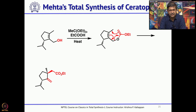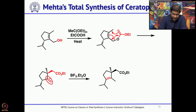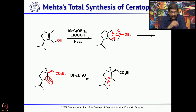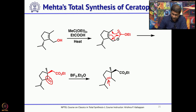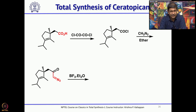The gamma,delta-unsaturated ester can be hydrolyzed to the corresponding carboxylic acid. But first, the double bond should be migrated to the internal position so that the diazoketone can add to it. Migration of the double bond to the internal double bond was done under Lewis acidic conditions. Then hydrolyze the ester to carboxylic acid, treat with oxalyl chloride to get the acid chloride, and upon treatment with diazomethane you get the corresponding diazoketone.